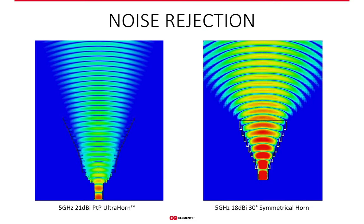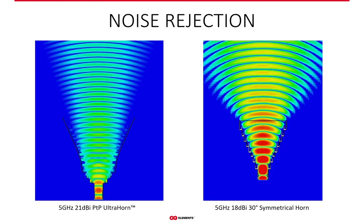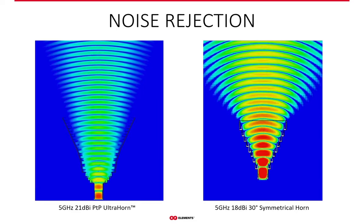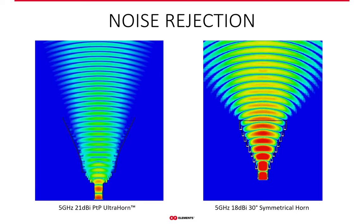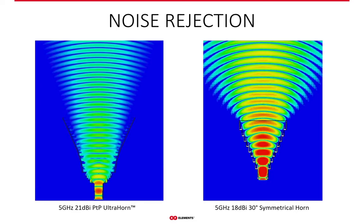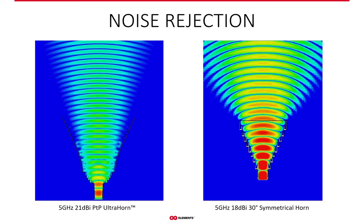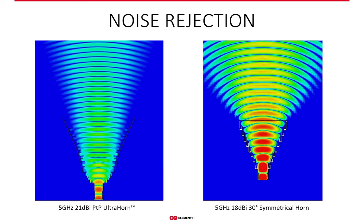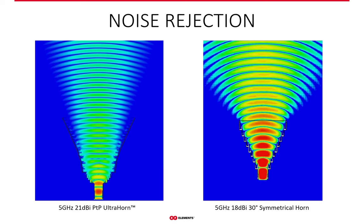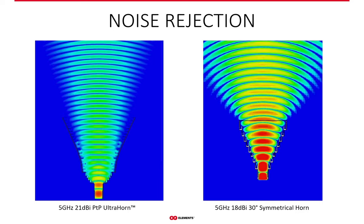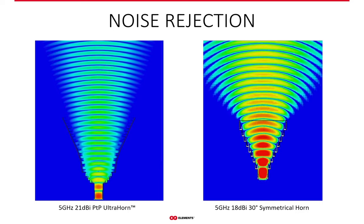And this is how the noise-rejecting antennas work. All the energy they radiate and receive is contained in the direction of the main lobe, and everywhere else there's nothing. So the horn antennas do not receive or create noise, effectively dealing with interference at its root.